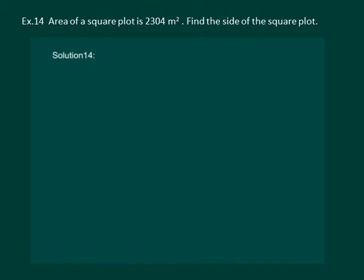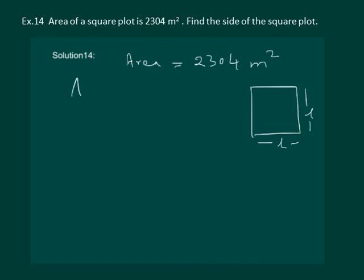Let us read the question. Area of a square plot is 2304 meter square. Find the side of the square plot. We are given that area is equal to 2304 meter square. We know that area of a square whose side is L is equal to L square.